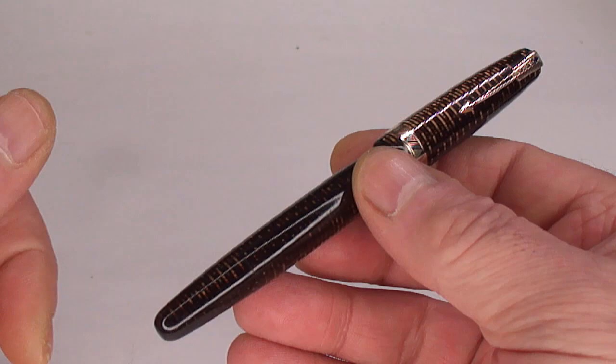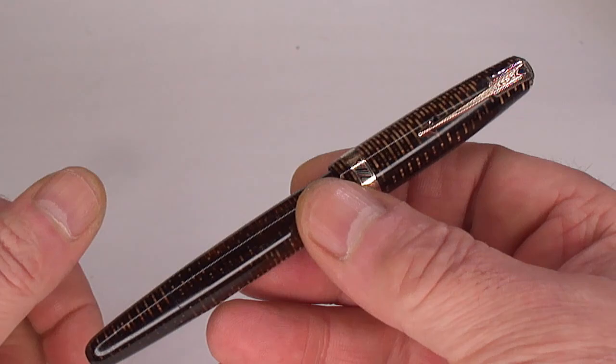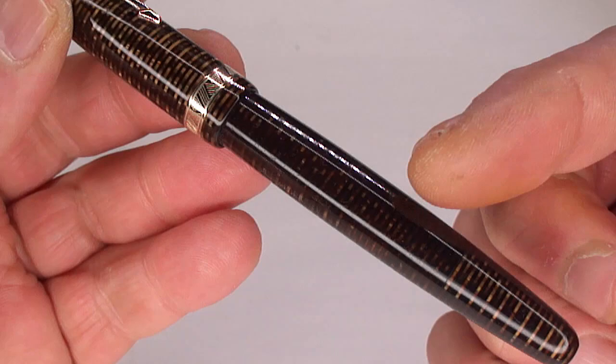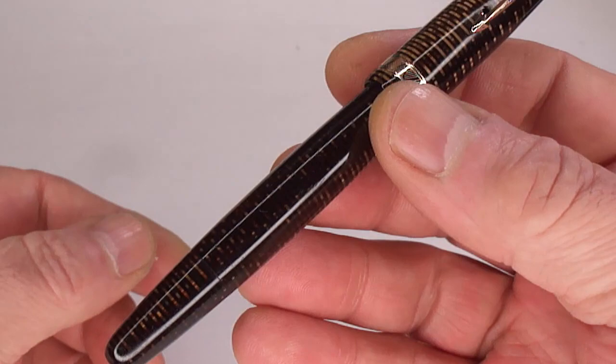If any of you people out there know, give me a comment down below and it'll help us all. What we've got is a Parker Vacuumatic that comes in this gorgeous golden brown pearl laminated pattern in absolutely gorgeous condition.